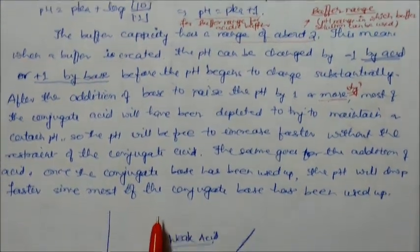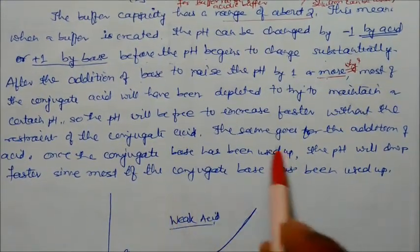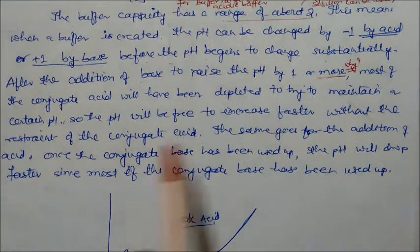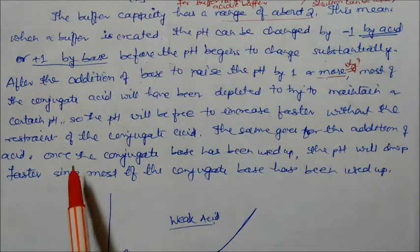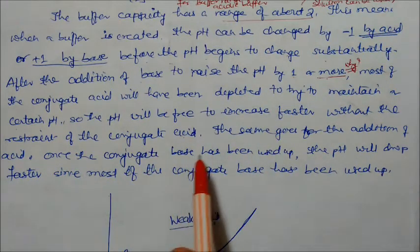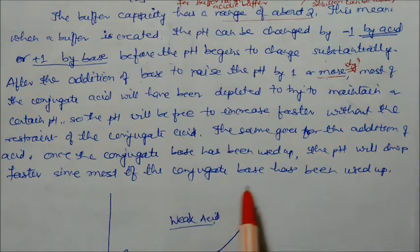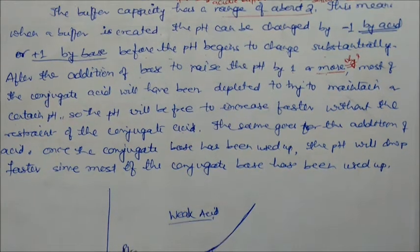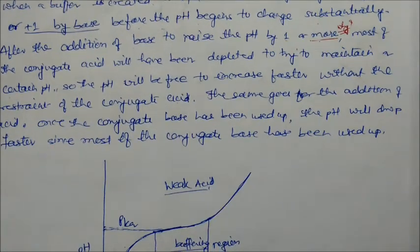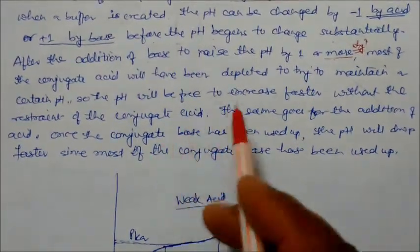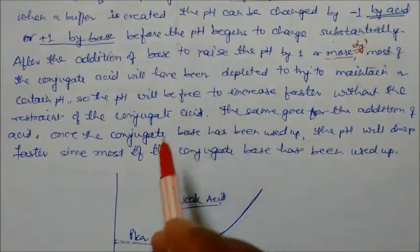The same applies for addition of acid: when you add acid, the conjugate base is used up and pH will drop faster because most of the conjugate base has been consumed. This explains why the pH changes by 1 unit in either direction at the buffer range limits.